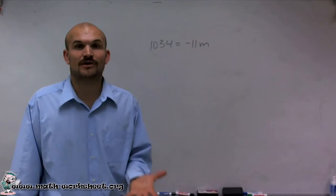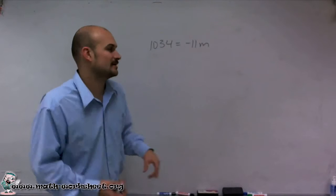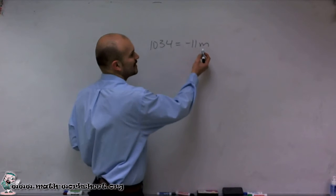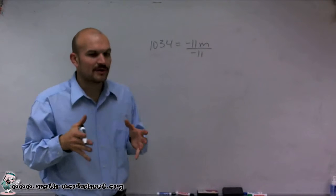So to find the value of your variable m, what you need to do is simply undo what's happening to it. So since it's being multiplied by negative 11, I need to divide by negative 11.